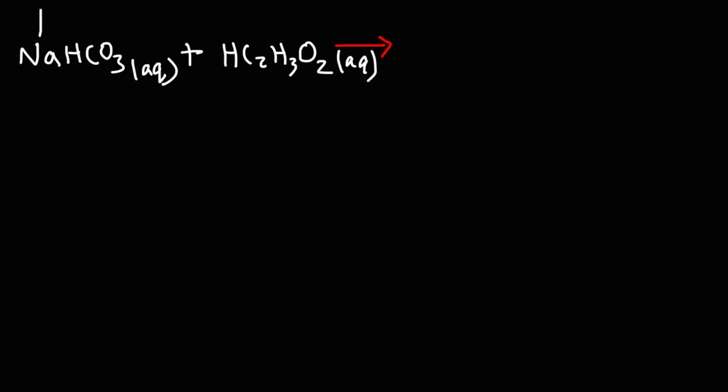So let's predict the products first. Sodium is going to pair up with acetate. Sodium has a plus one charge. Acetate is C2H3O2 minus with a minus one charge. Because the magnitude of the charges are the same, we can simply write the chemical formula of sodium acetate in a one-to-one ratio. It's going to be NaC2H3O2.